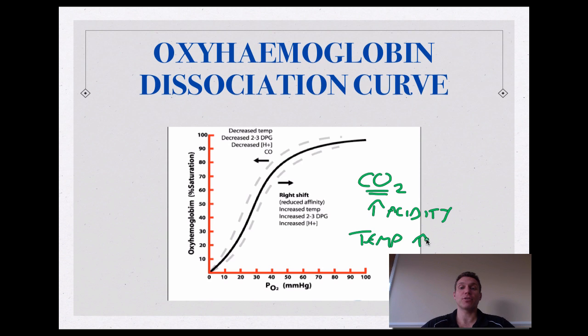That increase reduces the affinity of hemoglobin with oxygen. Therefore, we release more of it, which then can be taken up by the myoglobin. That shift to the right of that curve is the oxyhemoglobin dissociation curve with the Bohr shift. That Bohr shift, that shift to the right, is created by carbon dioxide increasing the acidity and temperature increase.